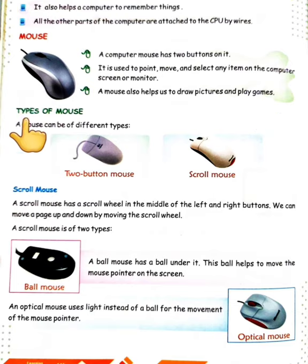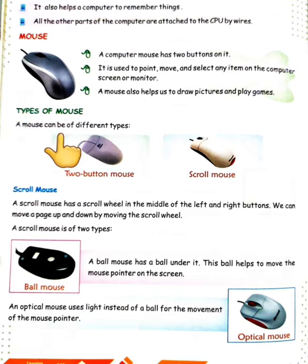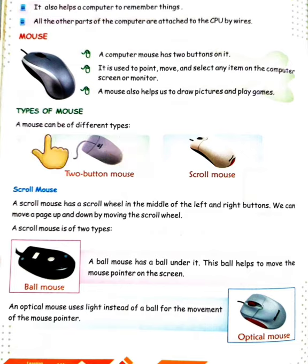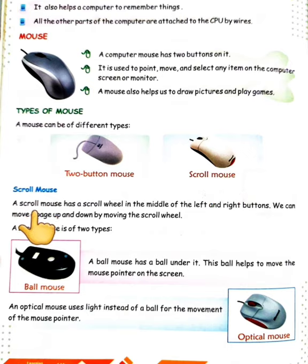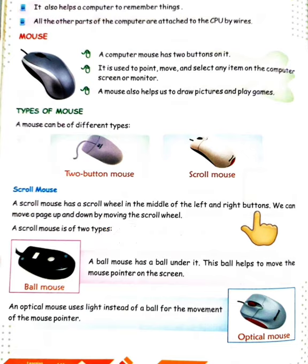Now let's read about the types of mouse. A mouse can be of different types — two button mouse and scroll mouse. A scroll mouse has a scroll wheel in the middle of the left and right buttons.